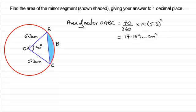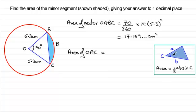Now we need to work out the area of triangle OAC. We have two sides and an included angle, and you should be familiar with this formula.